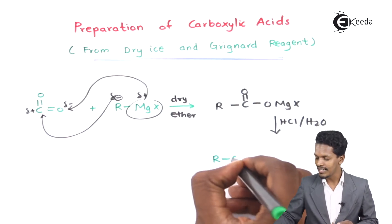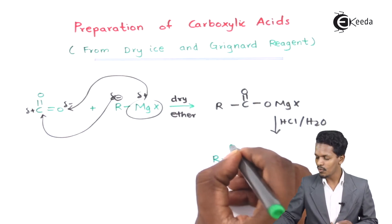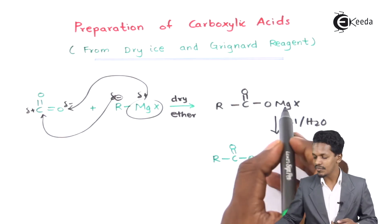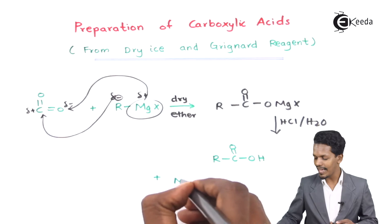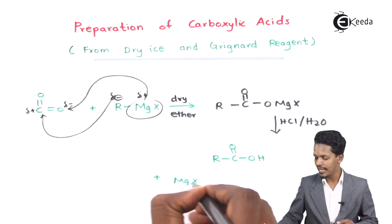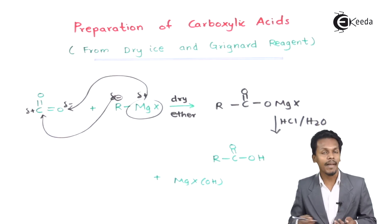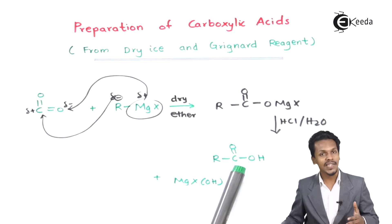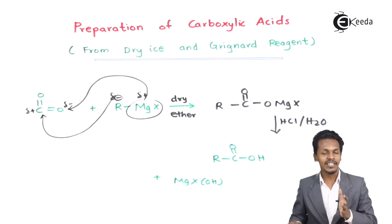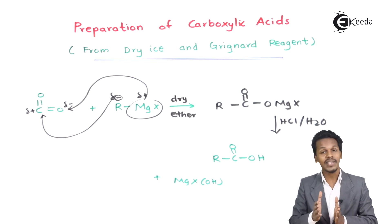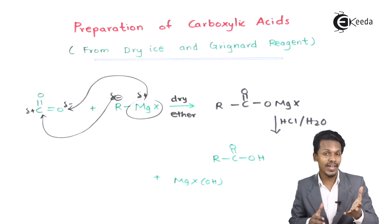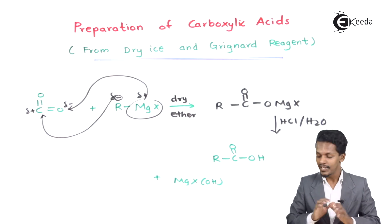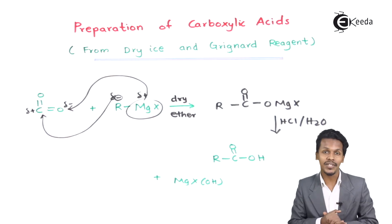This is how C=O-OH, that is carboxylic acid, is produced, while MgX-OH is removed as a byproduct. So this is how we can prepare carboxylic acid by the reaction of dry ice with Grignard reagent. Now let me give you an example related to this.